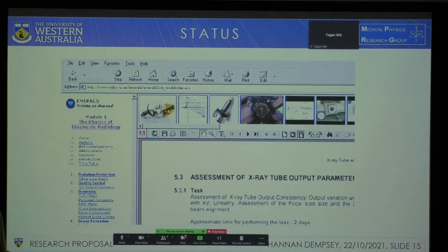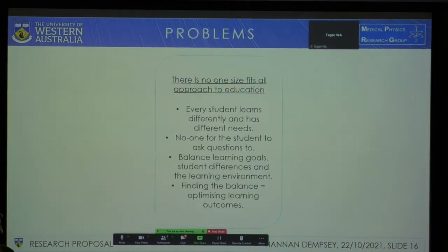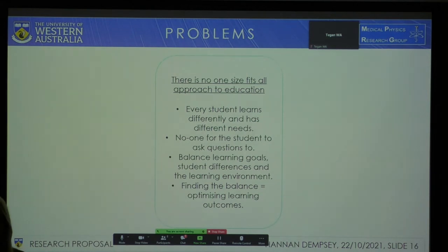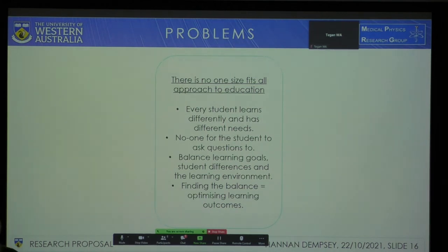So the aim of this project is to be a modern-day Project Emerald — to use today's current technology to meet the learning needs of students online. But it might have some problems. Firstly, there is no one-size-fits-all approach to education. Every student has different educational needs, and by balancing learning goals, student differences, and the environment people are going to be learning in, we are able to optimise the amount they learn and the outcomes they get. There is also no one available online for a student to ask questions of except Google, so by encouraging an online community where students can ask and answer each other's questions, both students benefit.